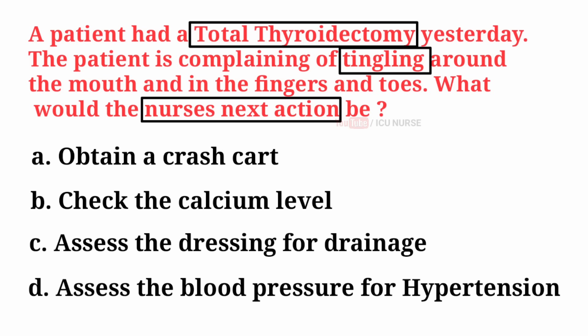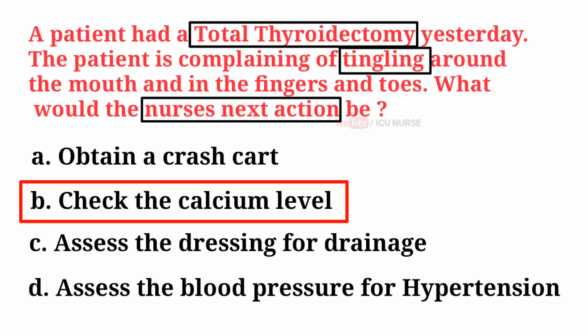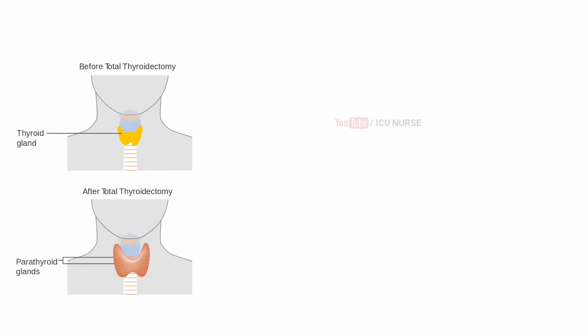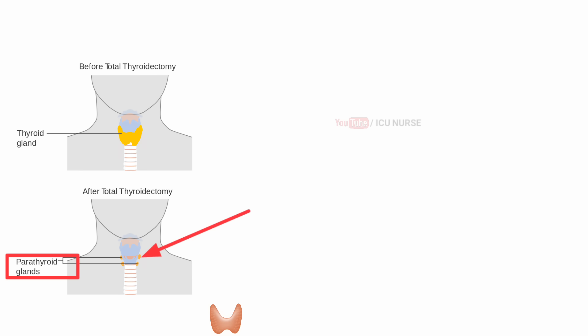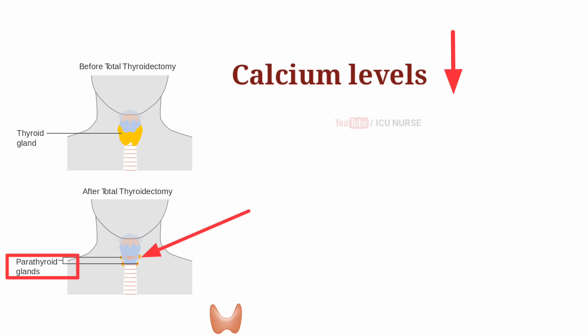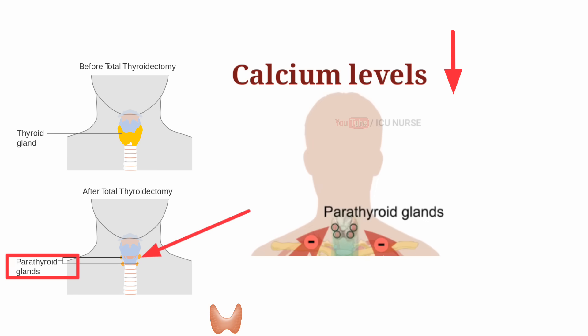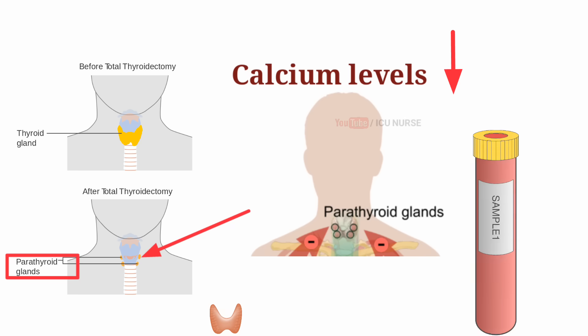And the correct answer is B. Check the calcium level. During total thyroidectomy — that is, total surgical removal of the thyroid gland — damage can occur to the parathyroid glands, which are located on the thyroid gland. Calcium levels can drop below normal as a result of the surgery because parathyroid glands regulate calcium levels in your blood. Hence, calcium levels should be monitored after thyroidectomy.